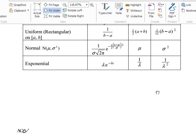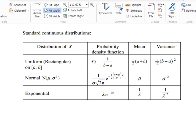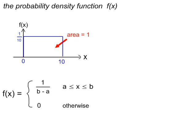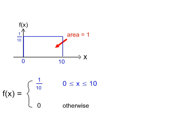From the AQA formula book, page 11, we have our rectangular distribution on interval a to b. The probability density function is 1 over b minus a in this interval. Outside that interval, the probability function is 0. We also have a formula for the mean, the variance, and we can square root the variance to get the standard deviation.